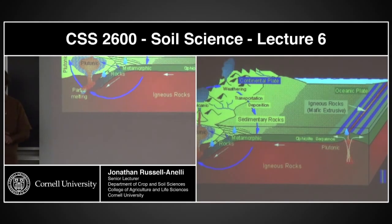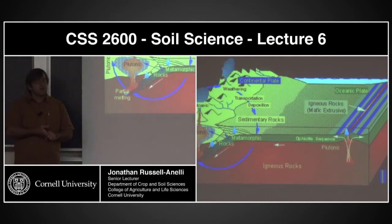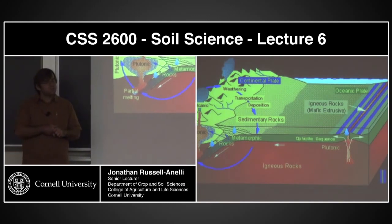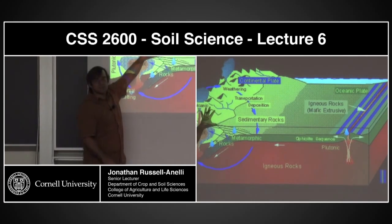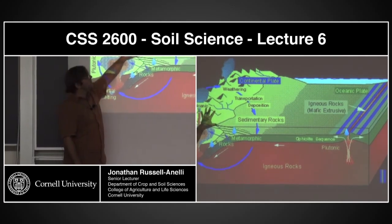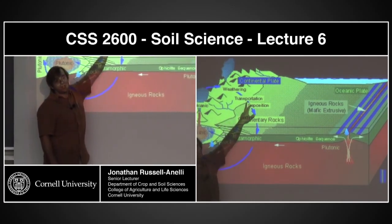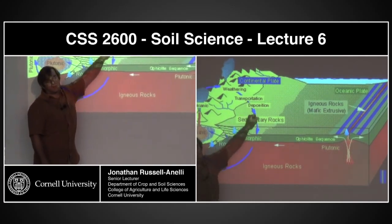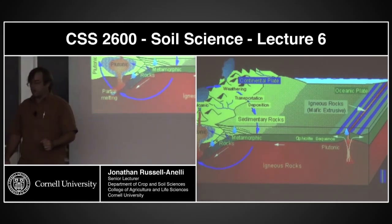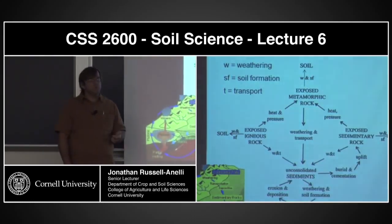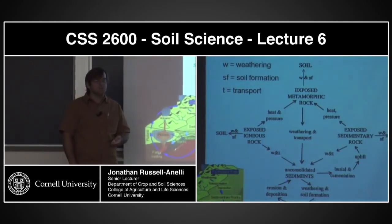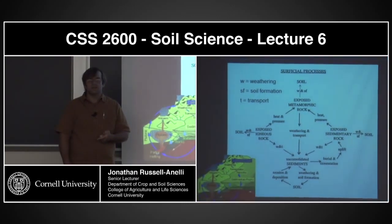We've talked about parent materials, the geologic cycle, and chemical and physical weathering — the transformation end of things. But we haven't really talked about the transportation end of this. Let's spend a little time talking about how these materials get moved, because the movement of these materials is also part of the weathering process.